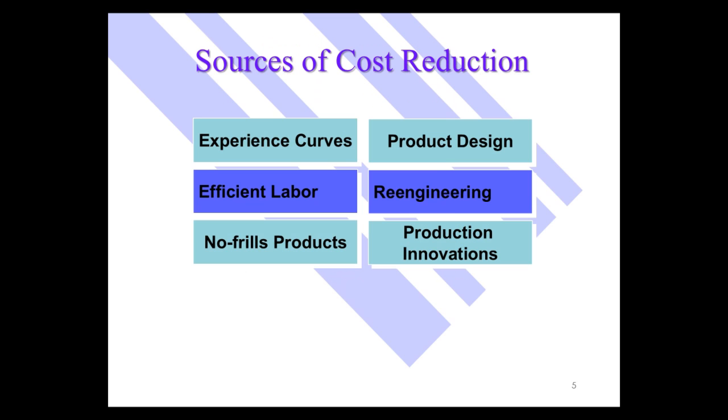Where can you get cost reduction? Experience curves is a major part of it. As the name implies, over time, greater and greater experience. The experience curve theory states that costs go down as cumulative production goes up, and that has been proven again and again. Of course, you can also design costs out of the product through product design, or lessen costs in the manufacturing process through more efficient labor or reengineering of the process.